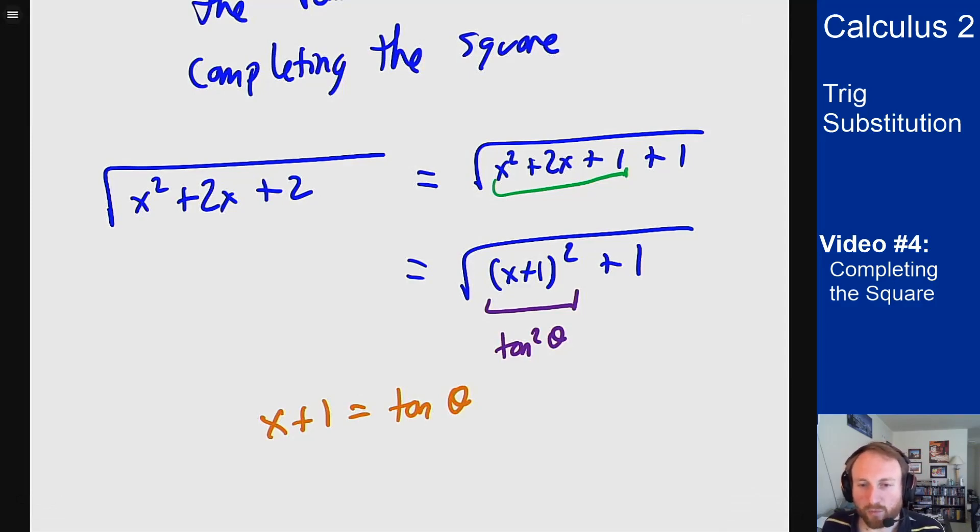I just have to be wary of that when I go back to doing the solving back in terms of x to make sure I use this as my expression and not just tangent theta. It's a different expression so your triangle is going to look differently but the ideas are still the same. Figure out what needs to be the trig function to make this work out, set that as your trig substitution, and then when you work back at the end make sure you take that into account when you're solving for what the expression should be in terms of x and not in terms of theta.